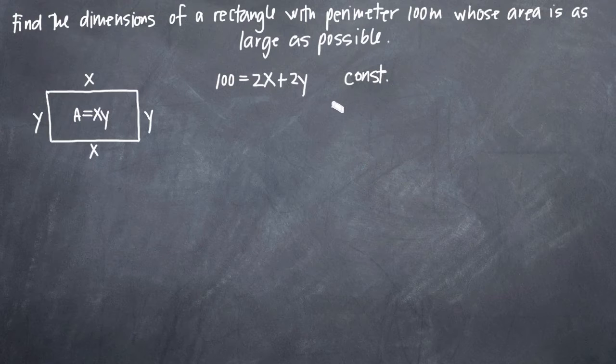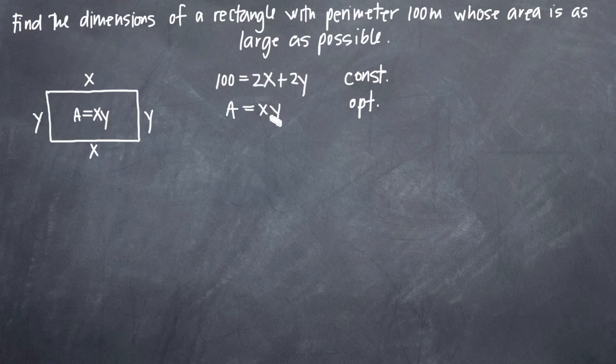The optimization equation will be the equation that we want to either maximize or minimize. In this case, we're looking for the largest possible area. That means we're trying to maximize the area or the area equation. So A = xy will be our optimization equation. Whichever equation it is that you're trying to maximize or minimize will be your optimization equation. Once we've identified the constraint equation and the optimization equation, we need to determine whether or not you have your optimization equation in one variable.